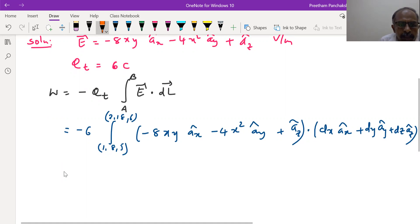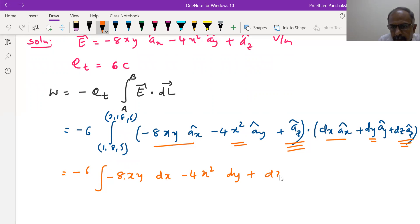So the dot product gives us x components to be multiplied, y components to be multiplied, z components to be multiplied together. So when x components are multiplied, we get minus eight xy into dx minus four x square into dy plus one into dz is dz. So we have separate x, y, z components here. The corresponding limiting values are also available.